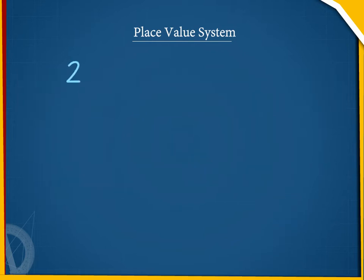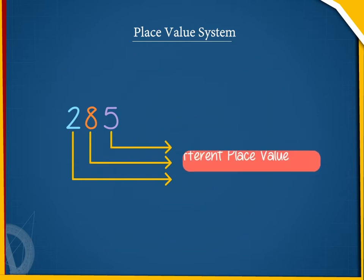The number 285 has three digits. Each digit has a different place value.